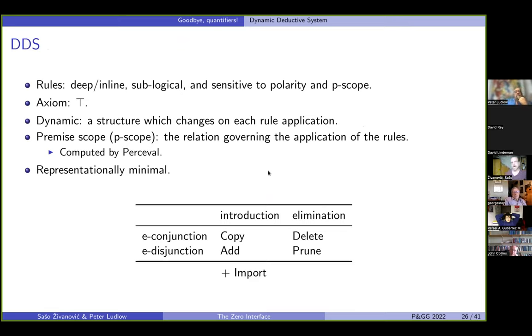So this is our DDS in short. I want to mention one little important thing about it. It's representationally minimal in the sense that the only data structure that you need to use it is the formula itself. If you know other deductive systems, let's say Gentzen's natural calculus, you will remember that the proof in those systems like a tree. So it's basically a tree of formulas, a tree of trees, if you will. We don't need anything like that. Everything we need is already in the original formula of our original formula language. And importantly here, what we have is we have premise scope, which governs the relation between the premise and the target. And this premise scope is computed by Percival.